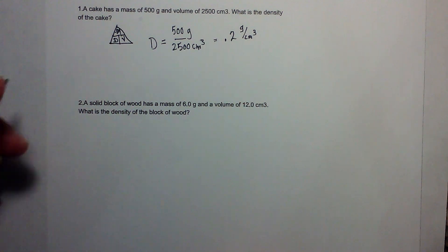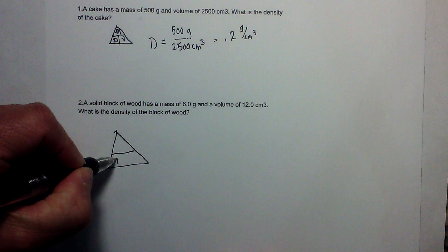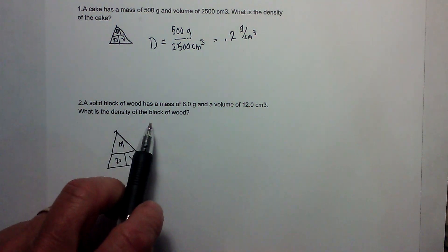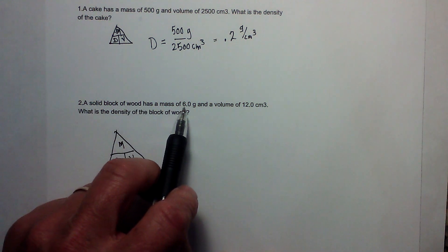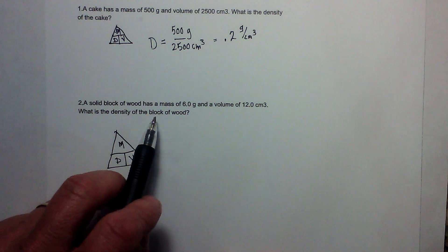The next example: again I'm going to draw a little triangle, DMV. A solid block of wood has a mass of 6 grams and a volume of 12 centimeters cubed. What is the density of the block of wood?